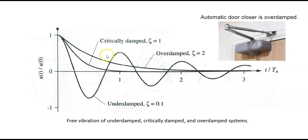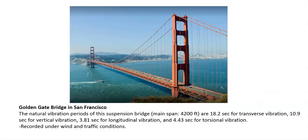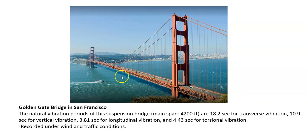As an example of an over damped system, we have the automatic door closer, and we have plenty of examples for under damped systems — buildings, dams, and bridges, offshore structures, all of them are under damped systems. The Golden Gate Bridge in San Francisco is an example of an under damped system. Its natural vibration periods are 18.2 seconds for transverse vibration, 10.9 seconds for vertical vibration, 3.81 seconds for longitudinal vibration, and 4.43 seconds for torsional vibration.